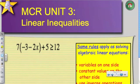That's 7 times negative 3 minus 2x plus 5 is greater than or equal to 12. So if we are applying the distributive property,